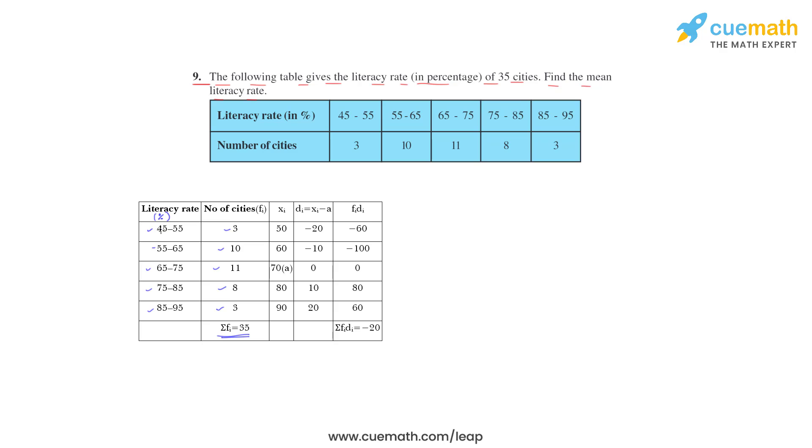55 plus 45 by 2 is 50; 65 plus 55 by 2 is 60; then 70, 80, and 90. Now let us assume the middle value as mean, so assumed mean is 70.